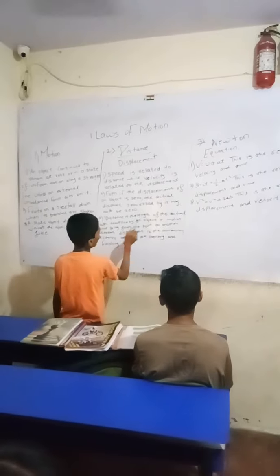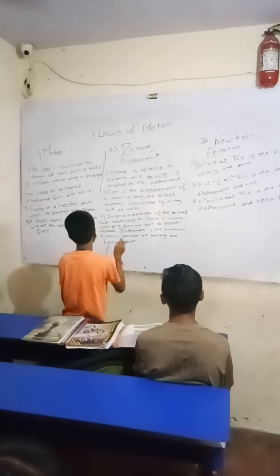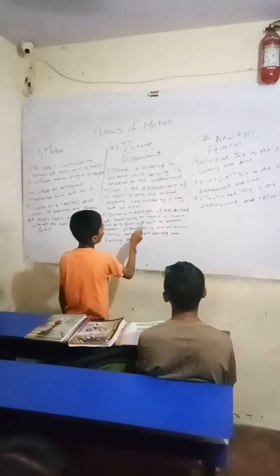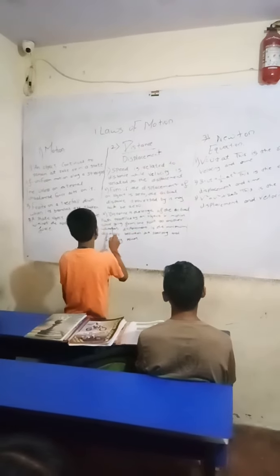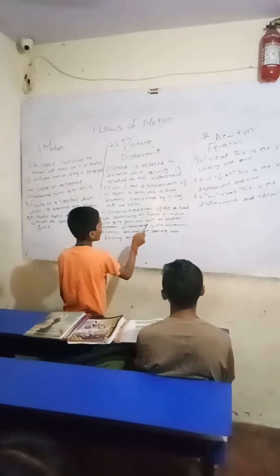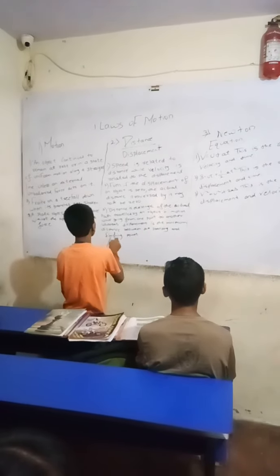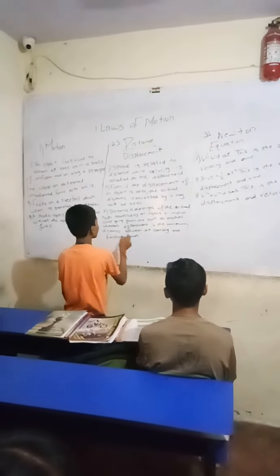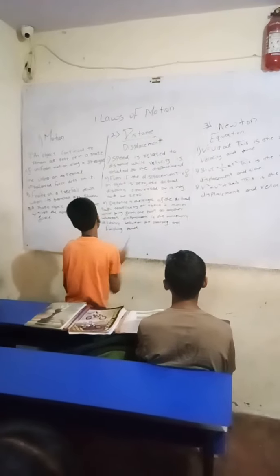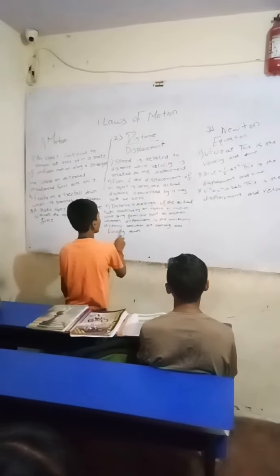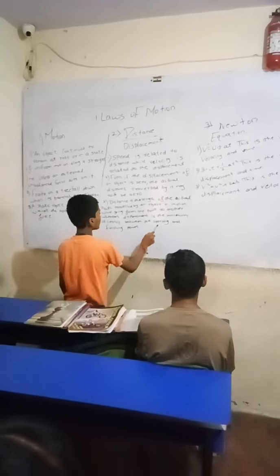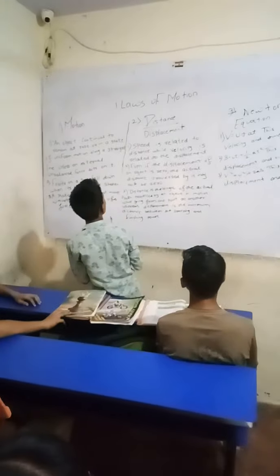Third point: distance is the length of the actual path traveled by an object in motion while going from one point to another, whereas displacement is the minimum distance between the starting and finishing point.